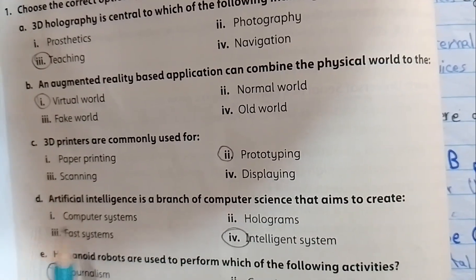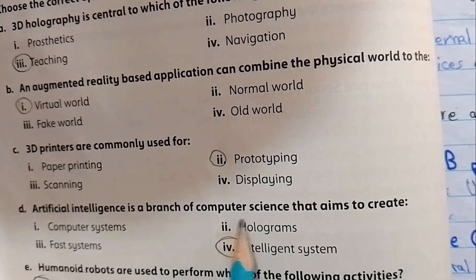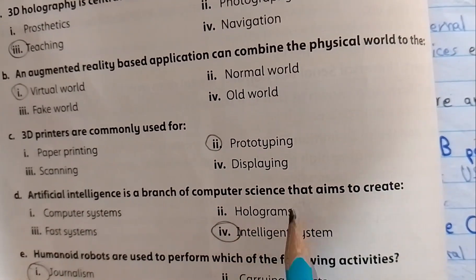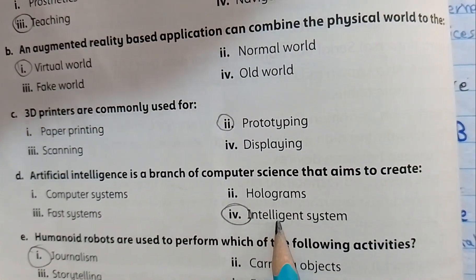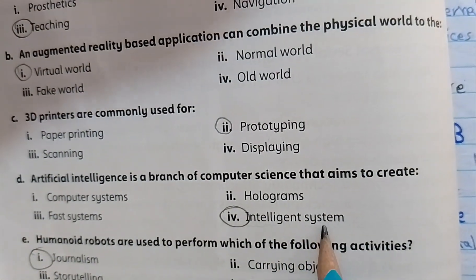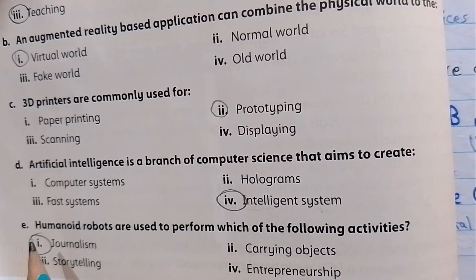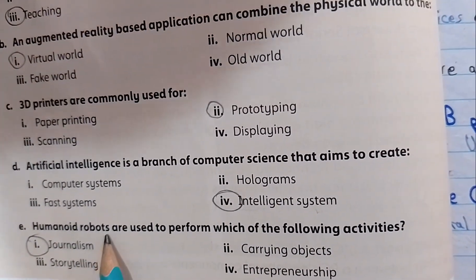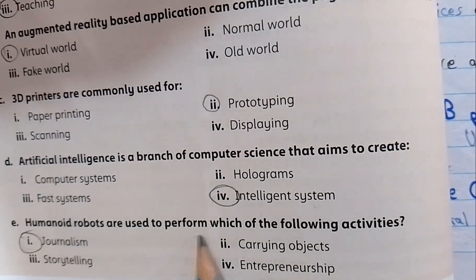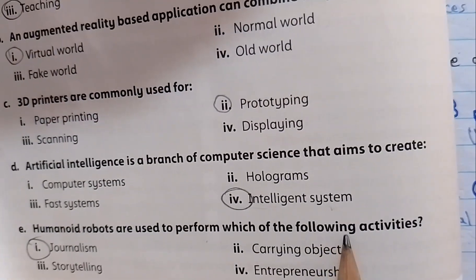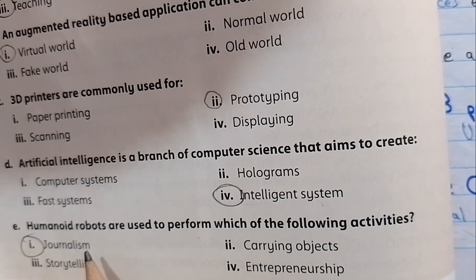Artificial Intelligence is a branch of computer science that aims to create intelligent systems. Humanoid robots are used to perform which of the following activities?